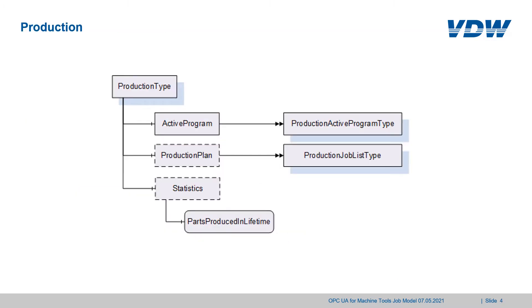The production component of the machine tool type is of production type. It aggregates the active program, it optionally contains the production plan, and it optionally contains the statistics showing information about the parts produced in the lifetime of the machine tool. On the following two slides we will have a deeper look into the active program and the production plan.